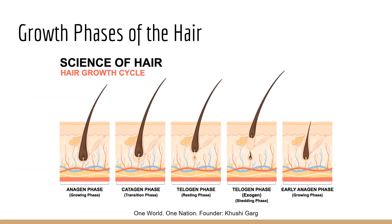The hair papilla supplies the nutrients the hair needs to create more hair cells. New cells are generated from the hair bulb, pushing the old dead cells upward and elongating the hair. The hair also goes through distinct phases for growth and shedding.